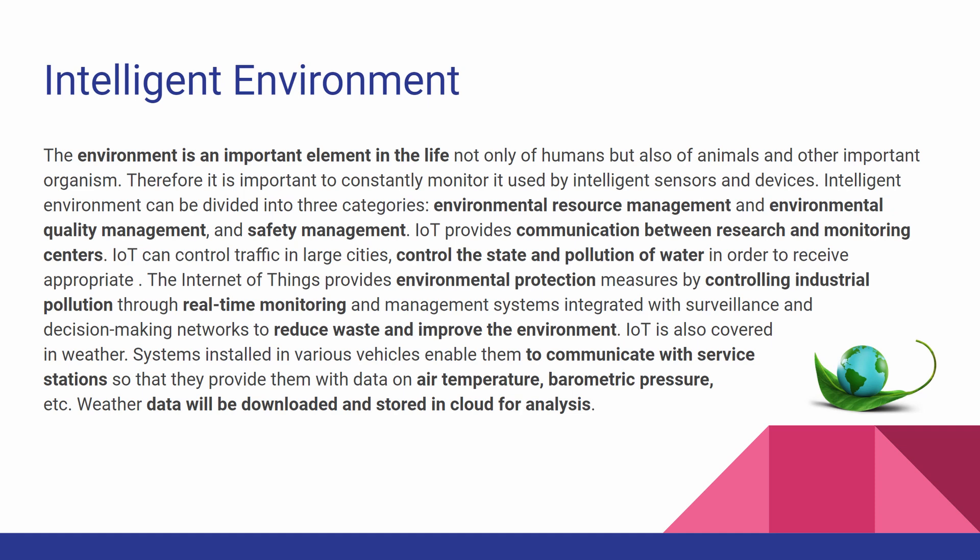The environment is an important element in life, not only of humans but also of animals and other organisms. Therefore, it is important to constantly monitor it using intelligent sensors and devices. Intelligent environment can be divided into three categories: environmental resource management, environmental quality management, and safety management. IoT provides communication between research and monitoring centers, can control traffic in large cities, and monitor the state and pollution of water. The Internet of Things provides environmental protection measures by controlling industrial pollution through real-time monitoring and management systems integrated with surveillance and decision-making networks to reduce waste and improve the environment.